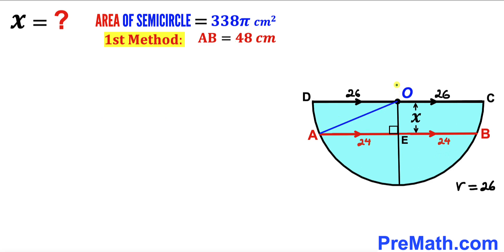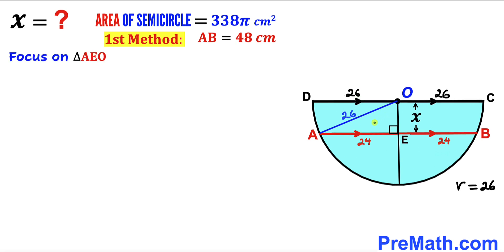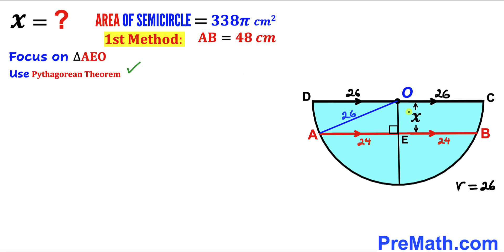Next, I have connected center O to point A. Since AO is a radius of the semicircle, AO = 26 cm. Now let's focus on right triangle AEO, whose side lengths are AE = 24, AO = 26 (hypotenuse), and the side length OE = x.